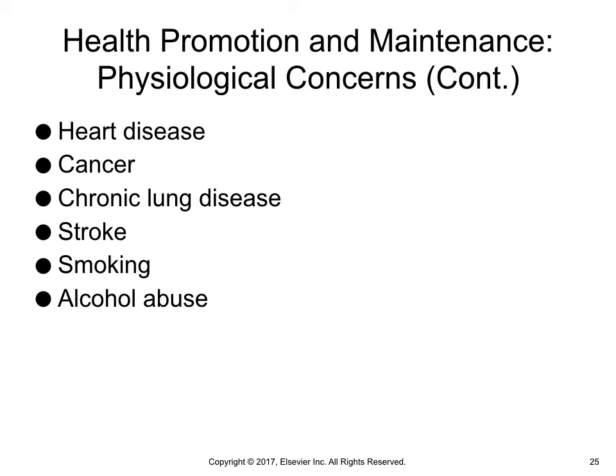Studies of alcohol abuse in older adults report two patterns: one, a lifelong pattern of continuous heavy drinking, and two, a pattern of heavy drinking that begins late in life. The continuum of interventions ranges from simple education about risks to formalized treatment programs that include pharmacotherapy, psychotherapy, and rehabilitation.